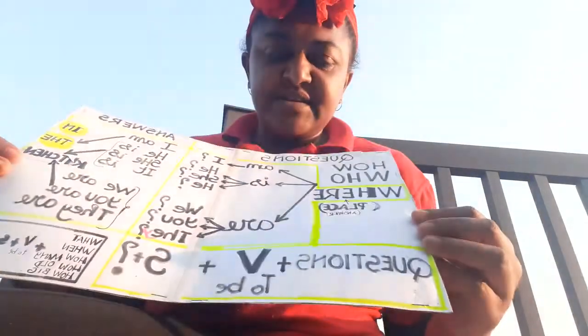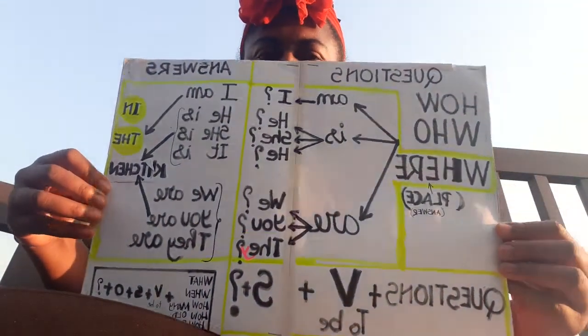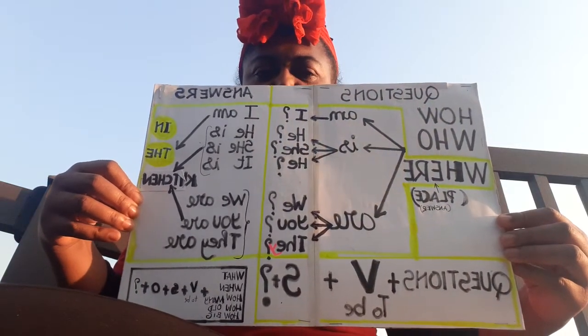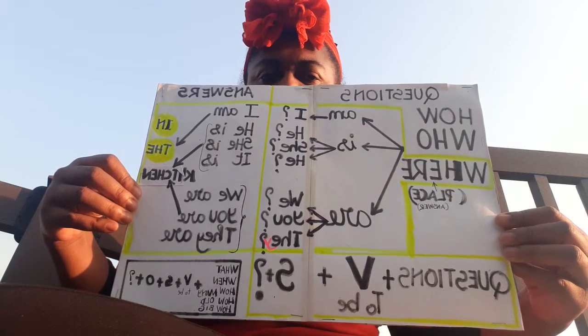Have you seen this? It's very simple. These are the question words: who, and how, and where, and what. They are simple questions to ask. I'm also enjoying the sunset while I'm teaching you guys.